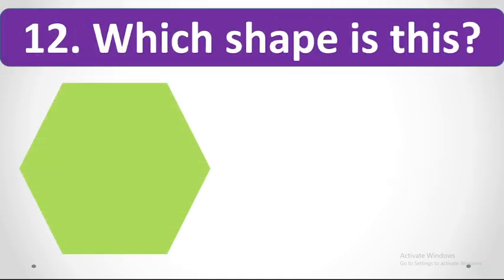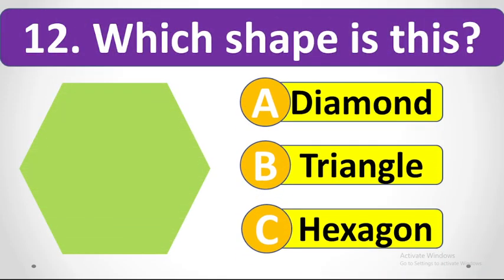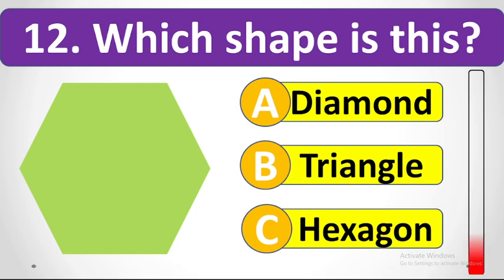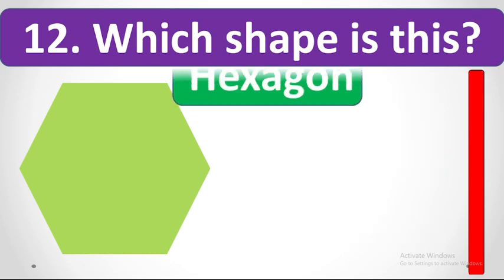Which shape is this? Your options are diamond, triangle, or hexagon. Your time starts now. It's a semicircle.